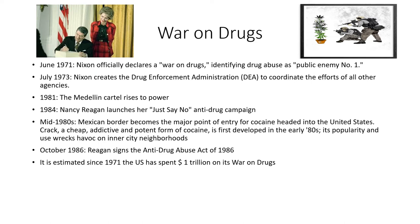In the mid-1980s, due to interdiction along the Tampa area and other coastal areas, the Mexican border became the major point of entry for cocaine headed into the United States. Around this time, crack — a cheap, potent, and highly addictive form of cocaine — was first developed. Its popularity grew especially among the poorer sections of large inner cities because it was very potent, very addictive, and a lot cheaper than powdered cocaine, and it started playing havoc on inner city neighborhoods.